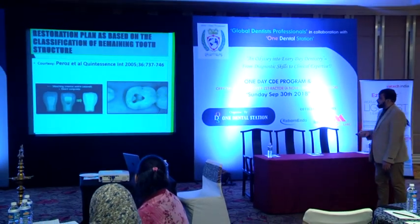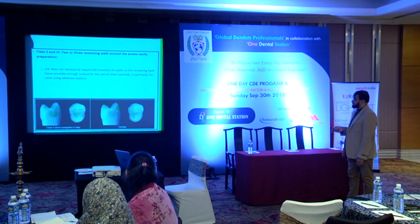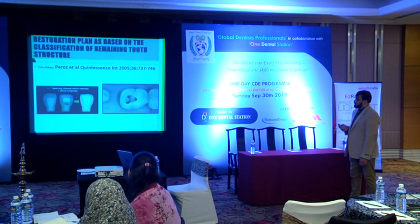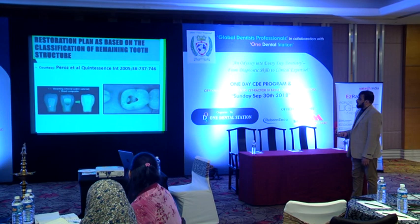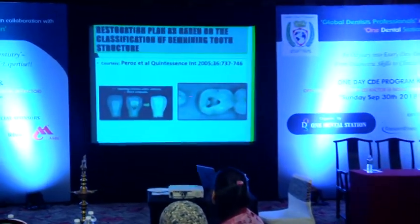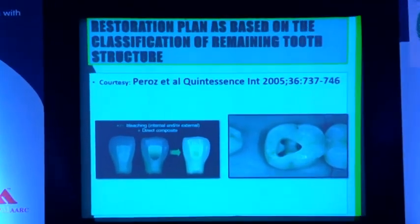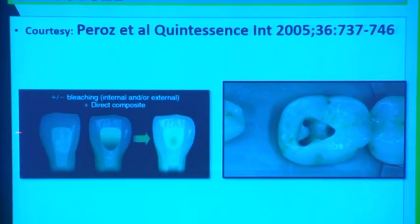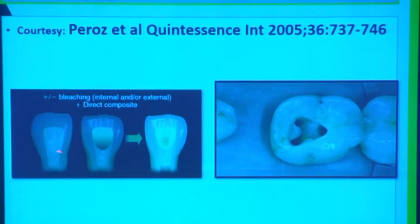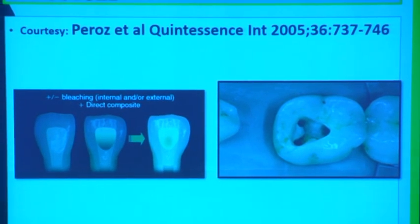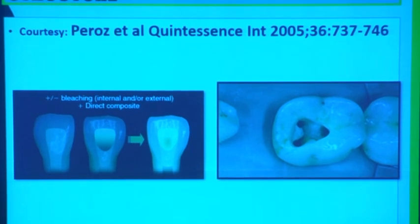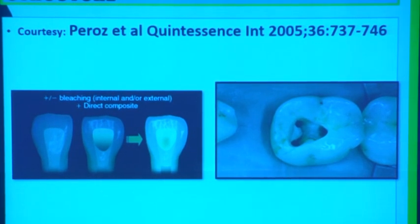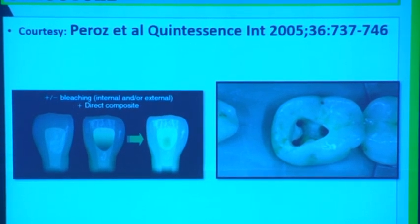The first one — this is Piro's classification. Class 1: if there are all the walls intact, and if you are doing intentional root canal or if there is a non-vital tooth because of trauma, then if all the walls are intact around the access opening, just a composite restoration is fine. If it is an anterior tooth, just the composite restoration is fine.